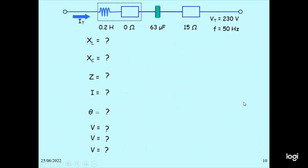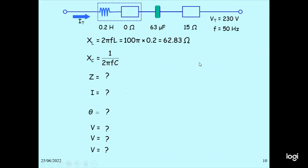So in this calculation we can see the inductor is 0.2H and the capacitor is 63 microfarad with 15 ohm resistance, and the frequency is 50 Hz. We have to find XL, XC, Z, I, theta, and the voltages. First, XL equals 2πFL — so 2π times 100 times 1.2 — and XC equals 1 divided by (2πFC), which is 1 divided by (2π times 100 times 63 microfarad), giving 55.3 ohms.